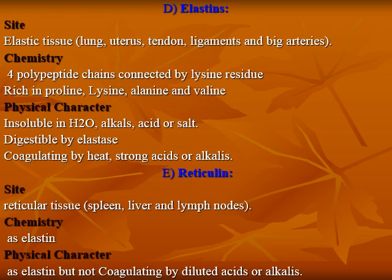The fourth type of scleroprotein is elastin. Elastin is present in elastic tissues such as the lung, uterus, tendons, ligaments, and large arteries. It consists of four polypeptide chains connected by desmosine. It is rich in proline, lysine, alanine, and valine. It is insoluble in water, alkaline, acid, or salt, and is digested by elastase.